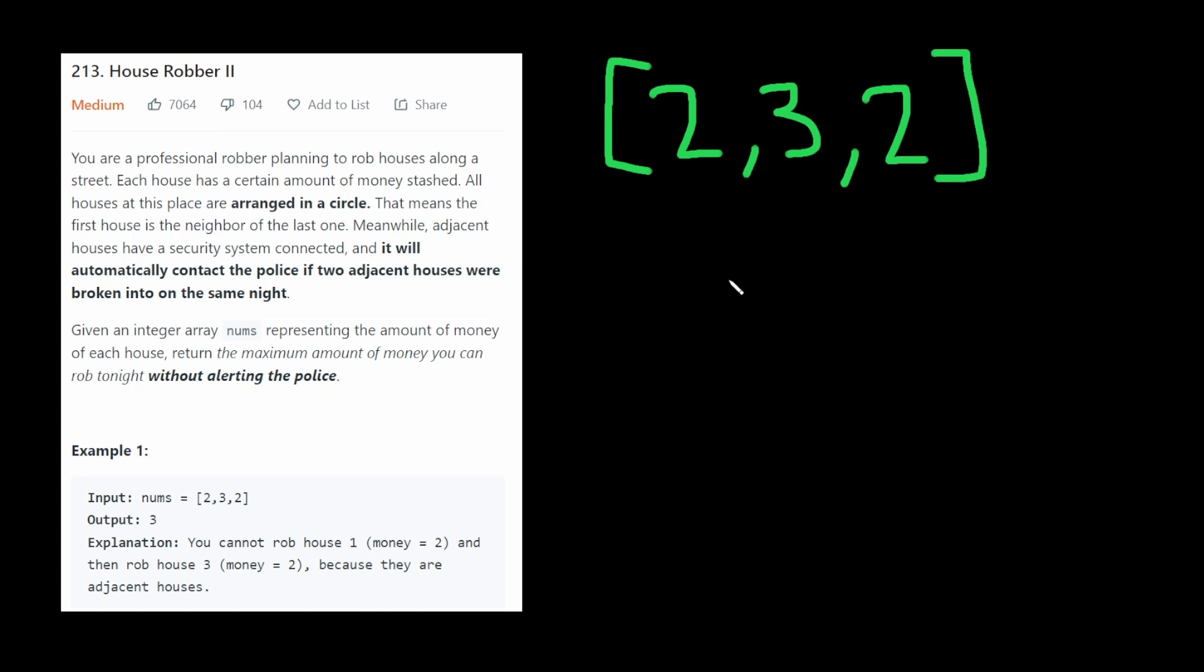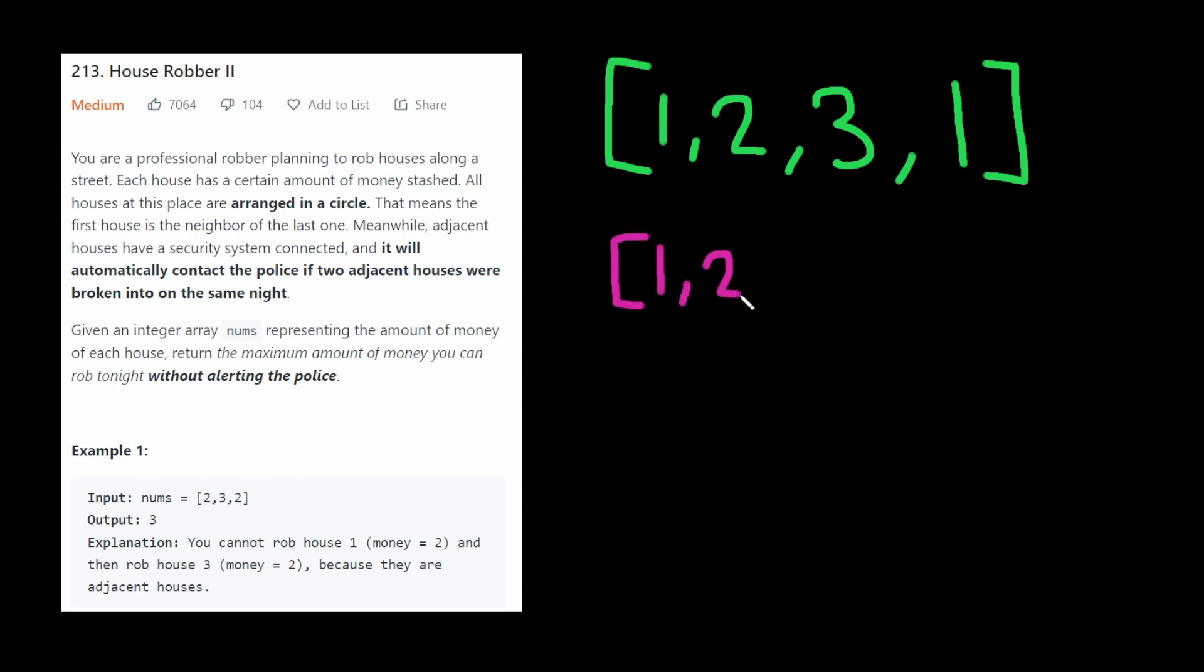Now we're going to use the same exact algorithm from House Robber 1 with just a minor twist. If you think about it if you're considering this first element here that means you cannot consider this last element. So really when you do the algorithm you do the algorithm for this array just like normal.